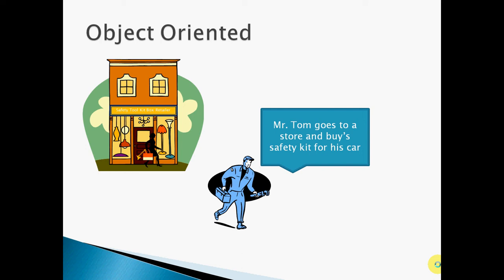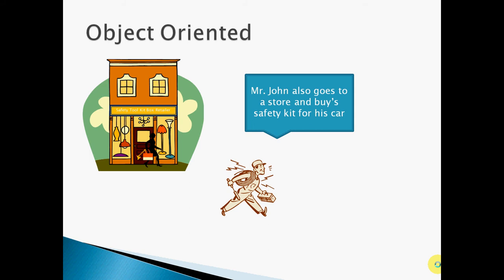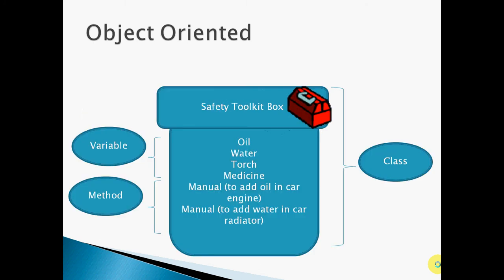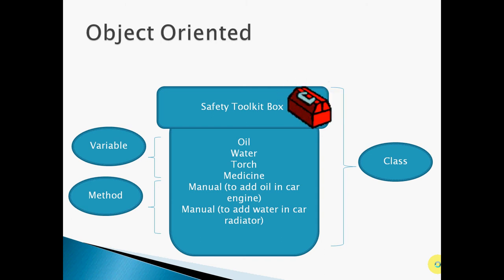Mr. Tom goes to this store and buys the Safety Toolkit Box for his car, and Mr. John goes to the same store and buys a Safety Toolkit Box for his car. Now, what does the Safety Toolkit Box consist of? It has oil, water, torch, medicine, and two manuals. This is the standard structure for all Safety Toolkit Boxes in the store. For Java programming, we will consider this Safety Toolkit Box as a class — as a whole class.